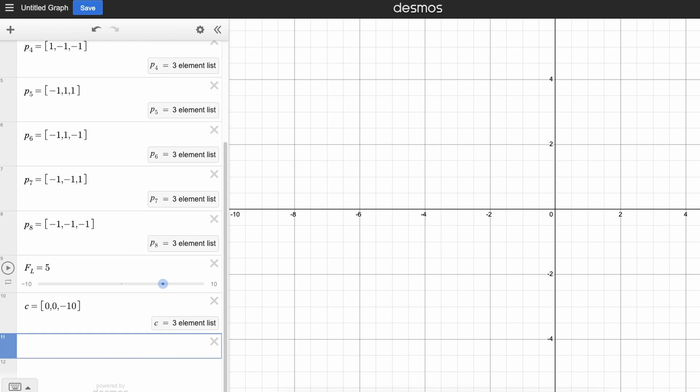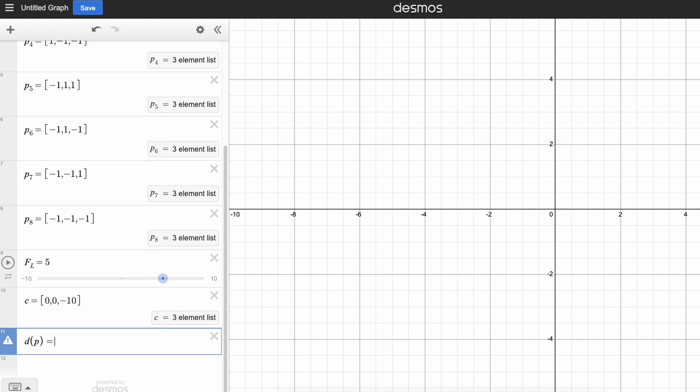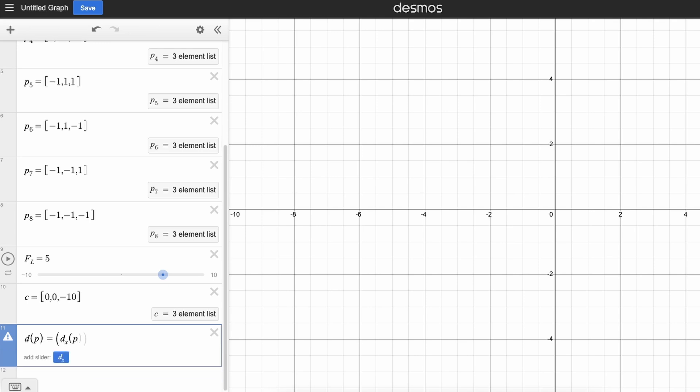Next, we're going to need a function where we can put in a point, and it'll output it onto the screen. So we're going to use D of P, so P is our point, equals, and then it's going to create a coordinate, so a point, and that's going to be D sub X, so D underscore X of P, and then on the right-hand side, it's D underscore Y of P, and that will be our function to display a point.